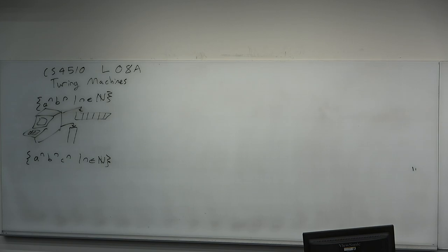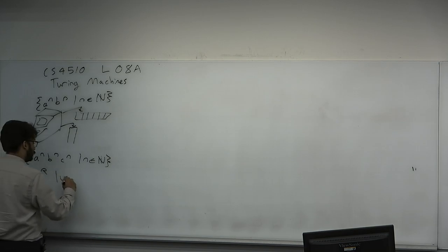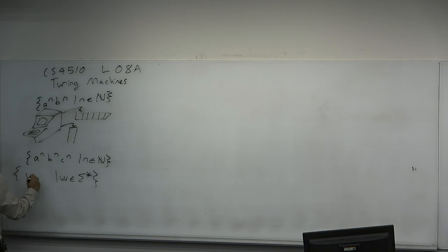So a stack is not the memory structure we need. What other data structures could we give to automatons? Two stacks — and a two-stack PDA provably can decide WW in sigma-star, which we proved a pushdown automaton cannot. So the two-stack PDA is certainly stronger than the one-stack PDA. We'll talk about the two-stack PDA more in depth.